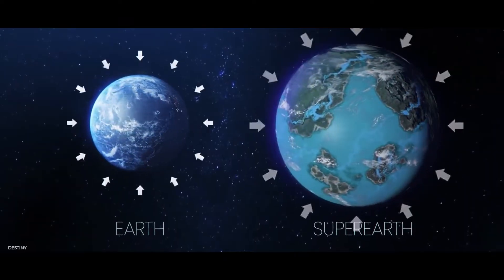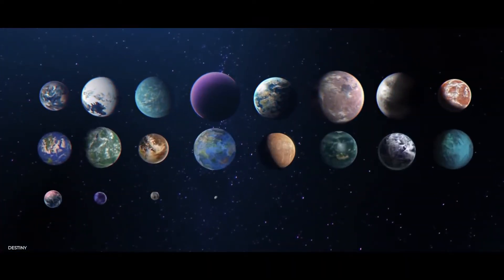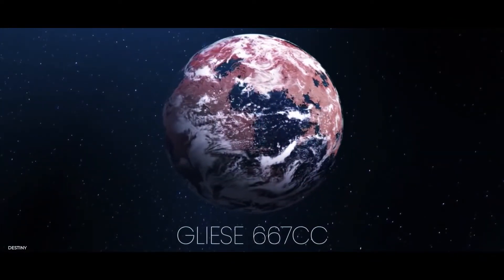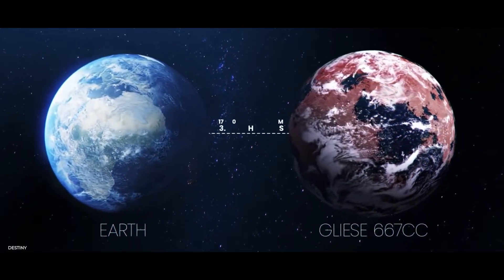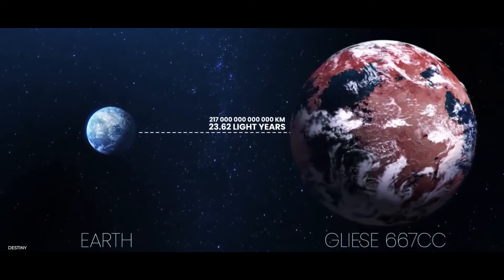While Earth number 2 remains elusive, here are the closest known twins to our planet. Number 1: Gliese 667Cc. Gliese 667Cc is about 22 light-years away from Earth and is about 4.5 times as big as Earth.